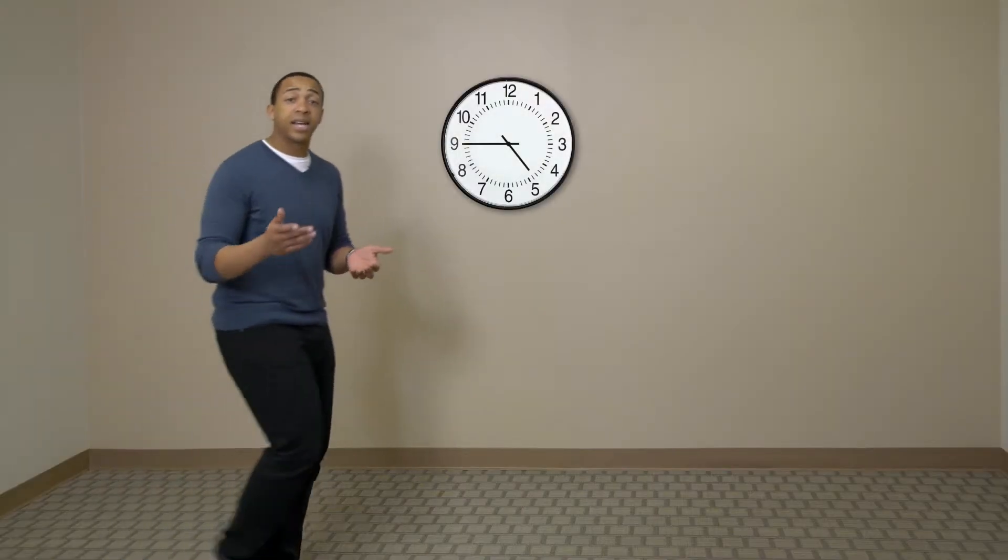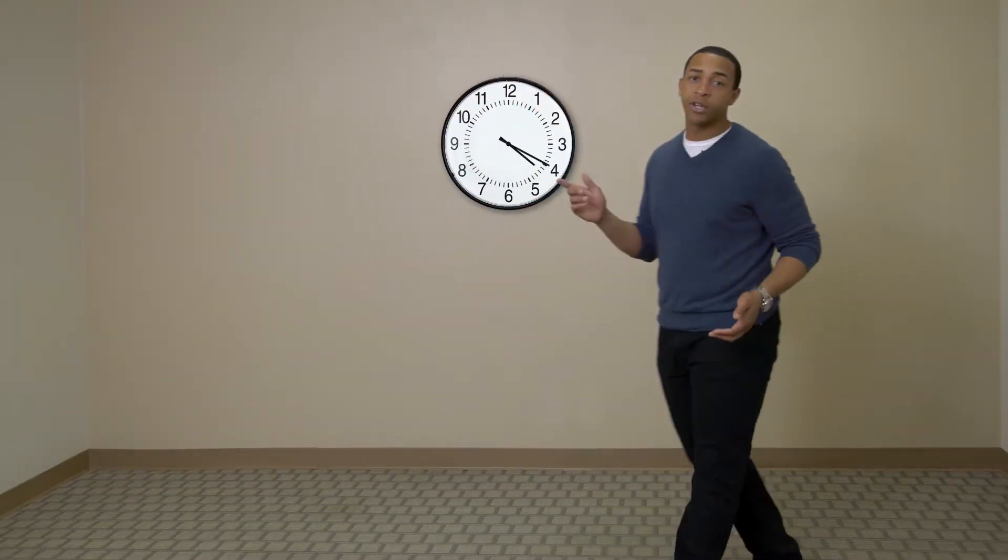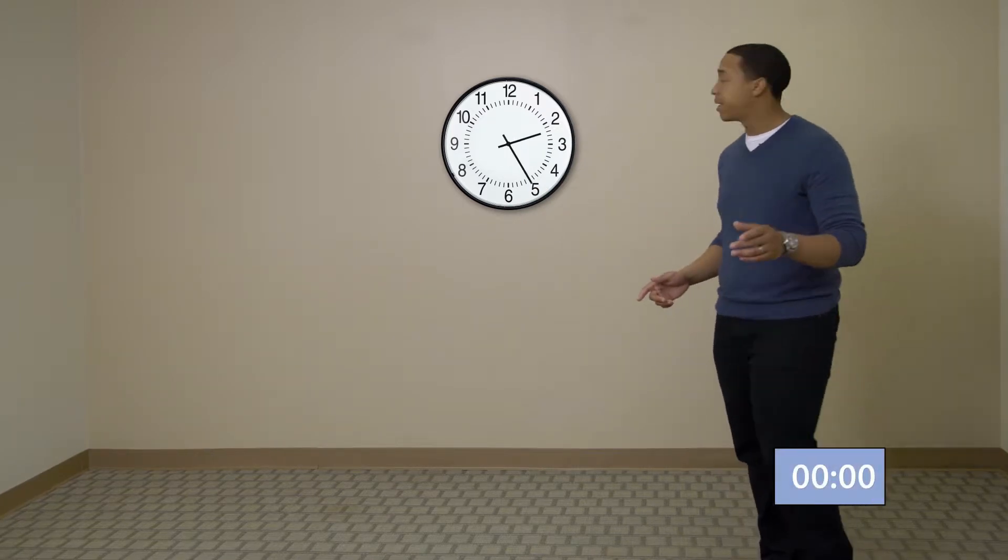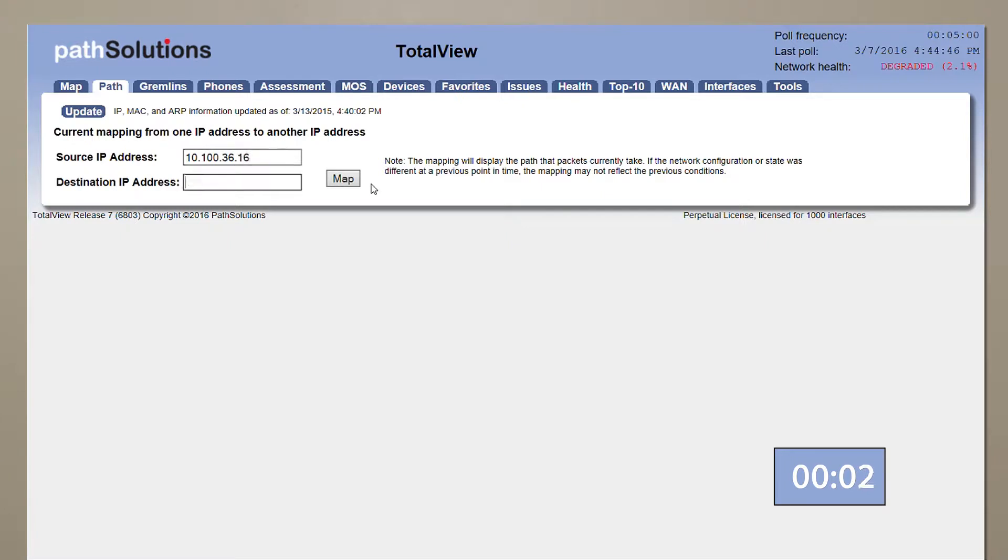So, let's say a user had a call quality problem occur two hours ago between their phone and the VoIP gateway. The clock is ticking. Enter the IP addresses of the two devices, and the system will generate a path through the network.